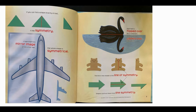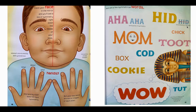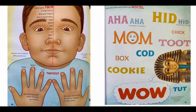Are there other names for this kind of symmetry? Yes, we're going to find out about that later. Check your face in the mirror — you'll see a line of symmetry right down the middle of your nose. One hand by itself does not have symmetry, but your two hands are mirror images of each other. Here are a few symmetrical words: aha, kid, mom, chick, toot, cod, box, cookie, wow. How many of these words have a horizontal line of symmetry? How many have a vertical? You need to pause the video and check it out.